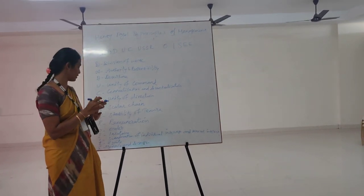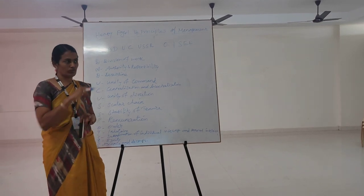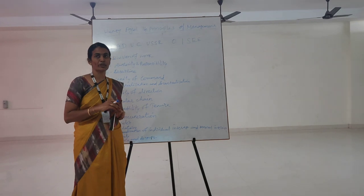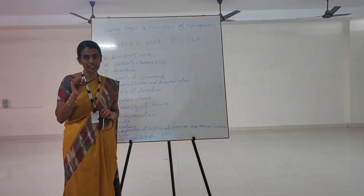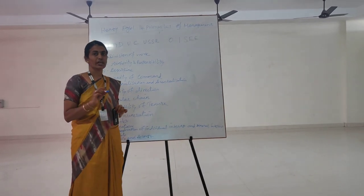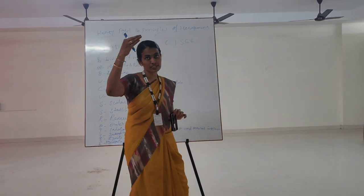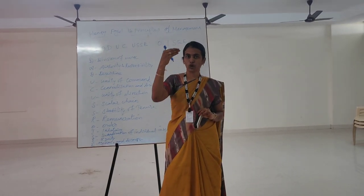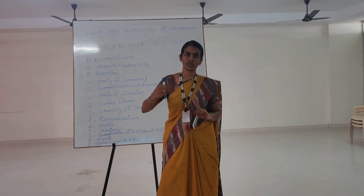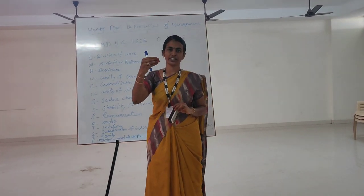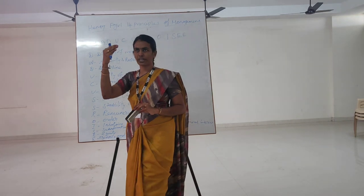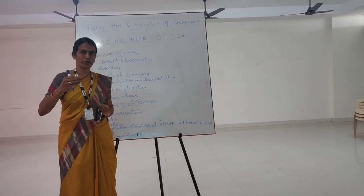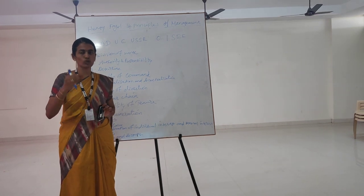The next one is the Scalar Chain. The scalar chain is the chain of authority and communication ranging from the highest to the lowest level — highest level management, middle level management, and lower level management. They are communicating in three ways: low level management communicating with middle level management, and middle level communicating with lower level management.